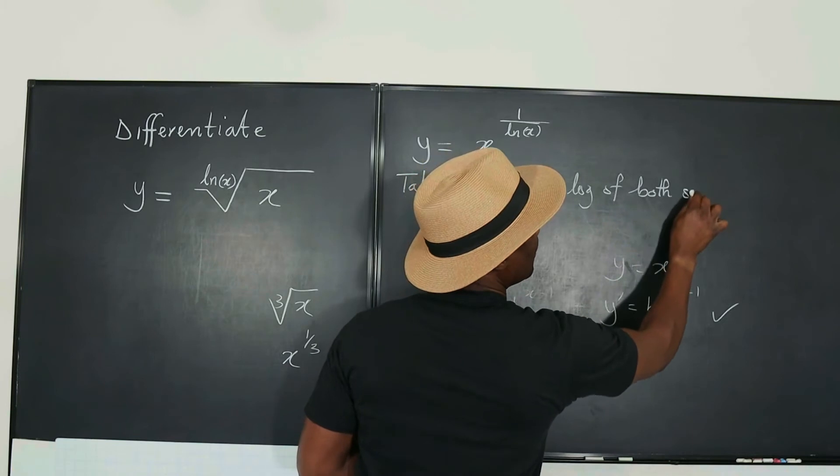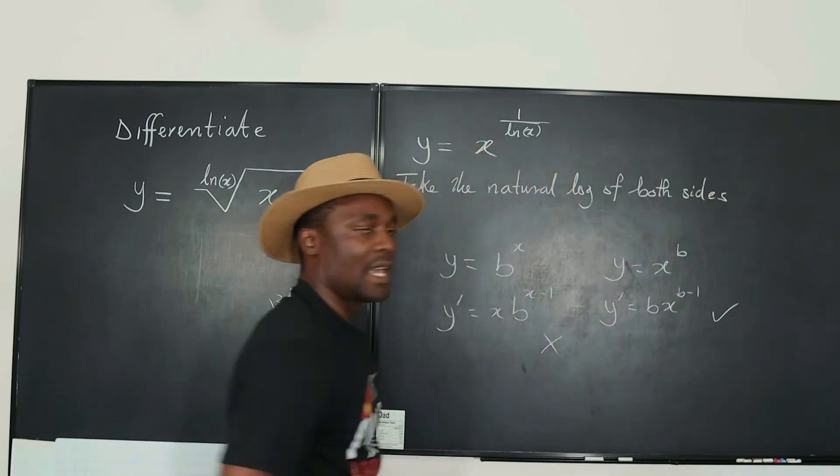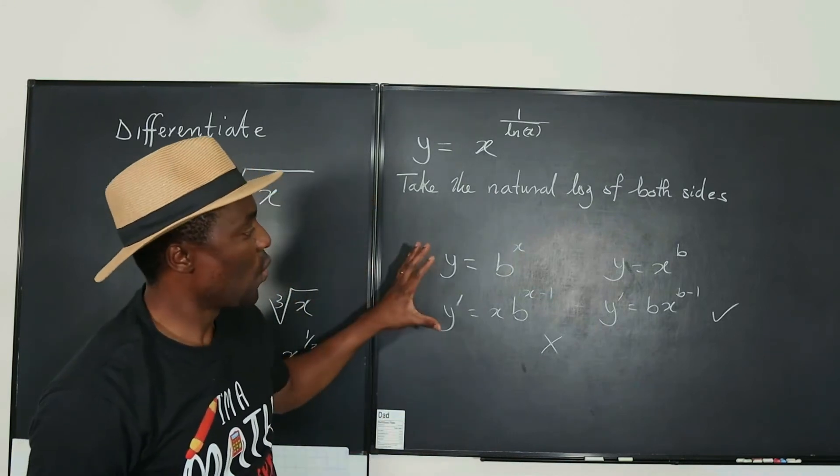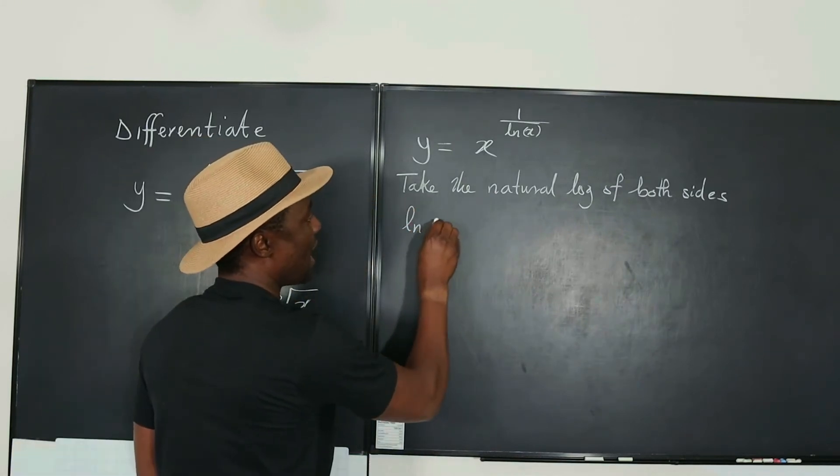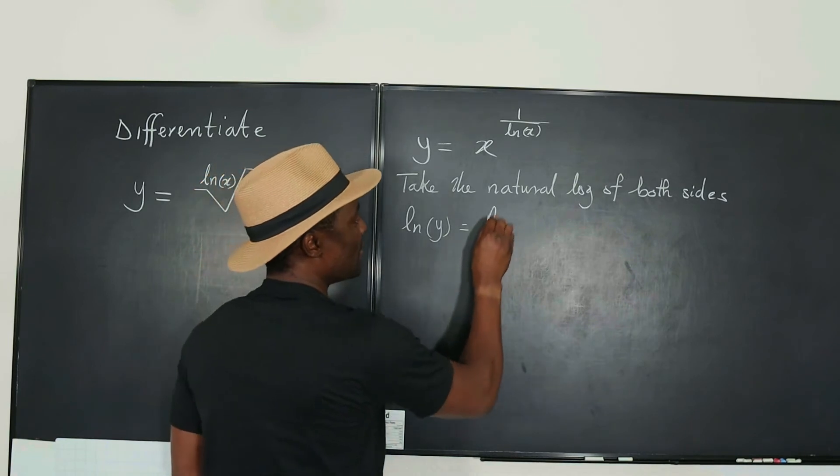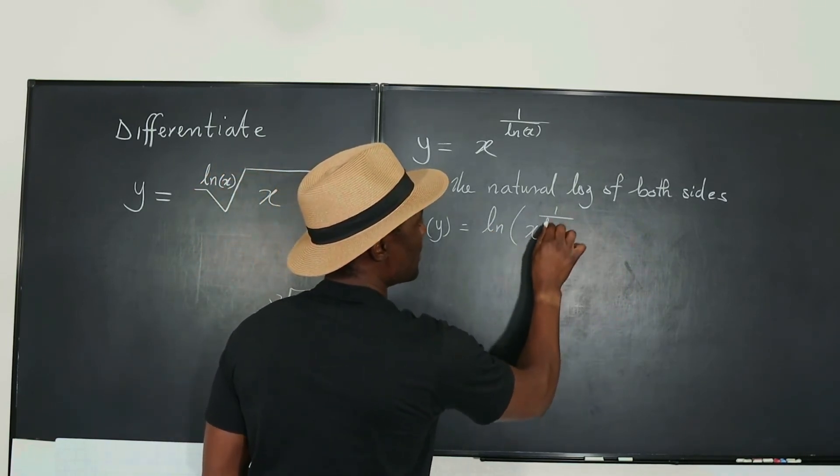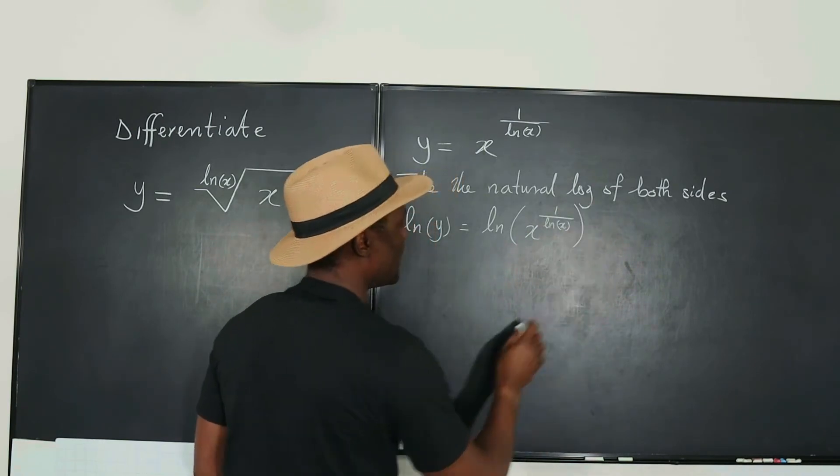So if we take the natural log of both sides, we'll see the beauty that we get. Let's get rid of this. Take the natural log of y will be equal to the natural log of x raised to 1 over the natural log of x.